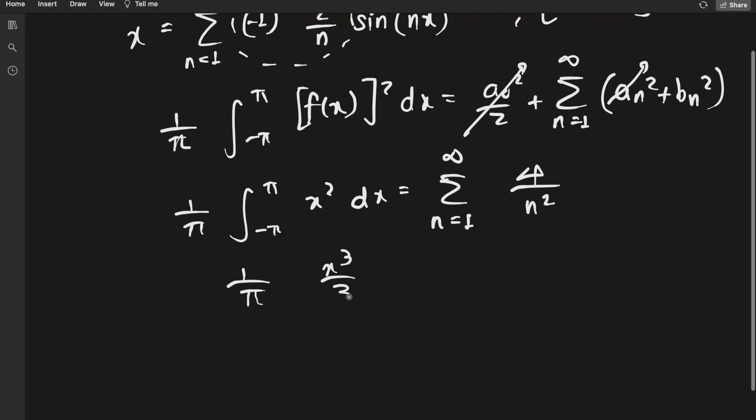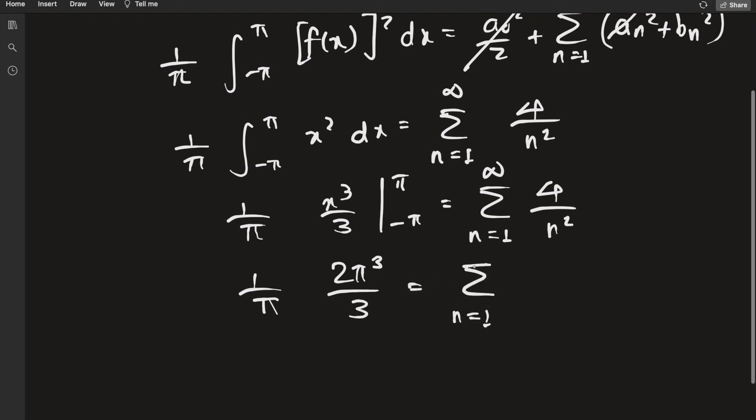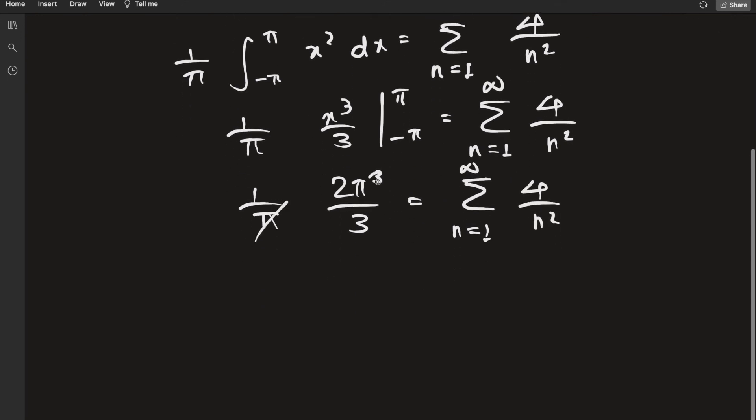Evaluated at π and negative π is equal to sum from n equals 1 to infinity of 4 over n squared. But if you just evaluate this: 2π cubed over 3 equals sum n equals 1 to infinity 4 over n squared. The π's will cancel out, you get π squared. Take the 4 on that side, you have sum from n equals 1 to infinity of 1 over n squared, which is precisely the Basel problem. That's equal to π squared over 6 on rearrangement, and that is what we had to prove or calculate.